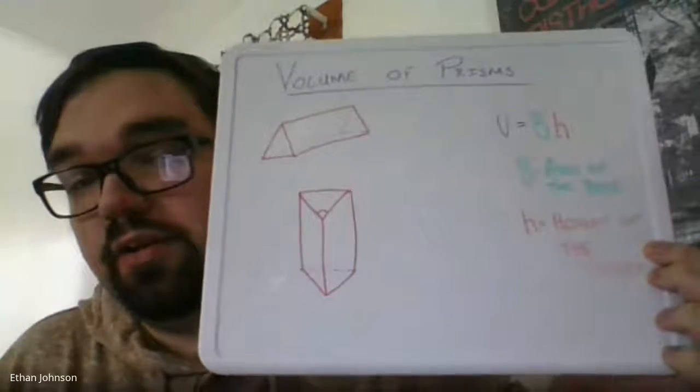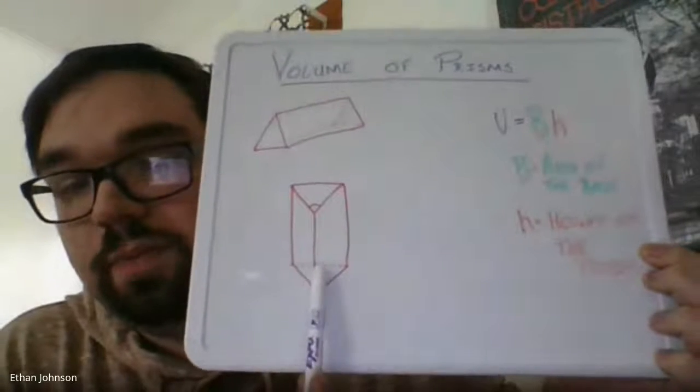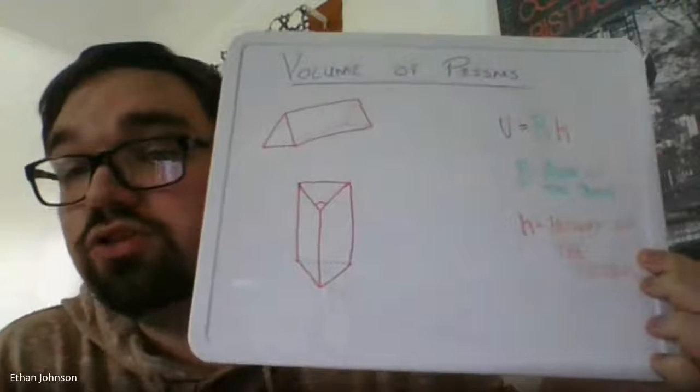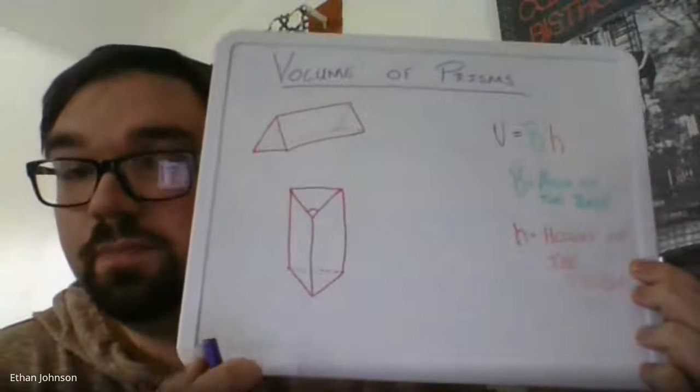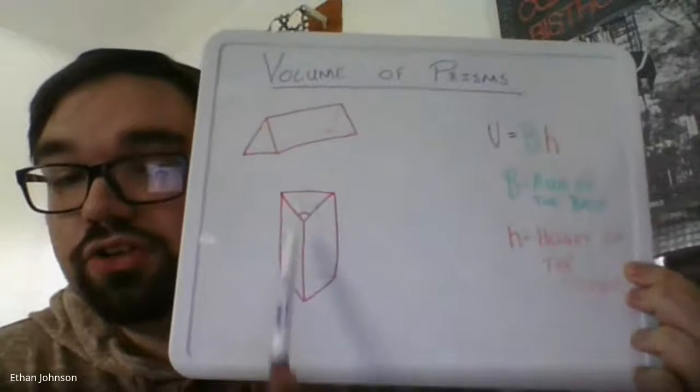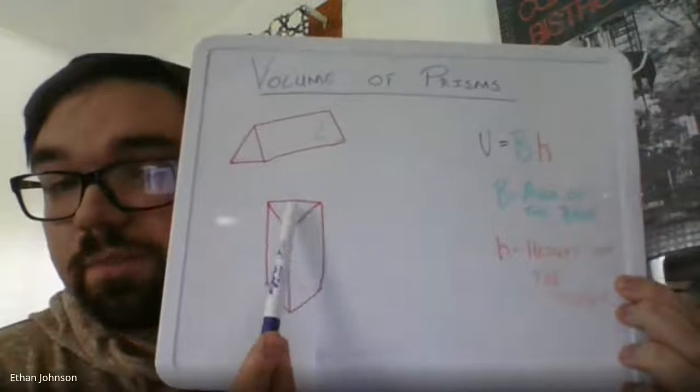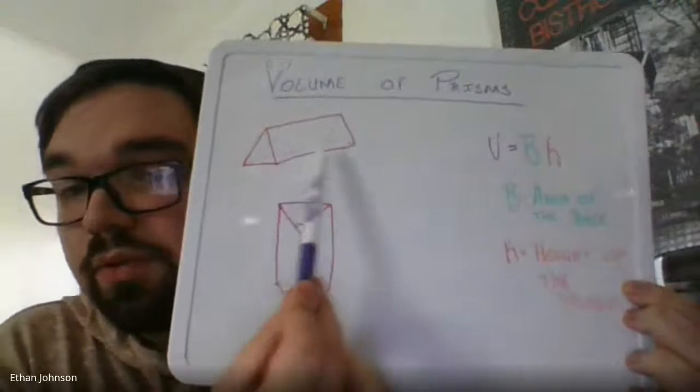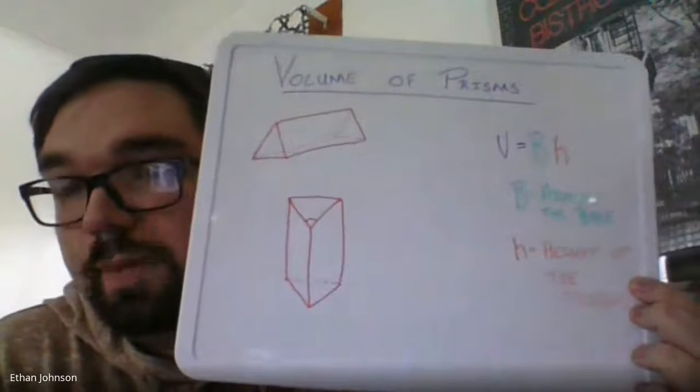We know these are triangular prisms because here's a base, here's a base. There's always two bases in a prism, and they're always opposite of each other. I know this is a triangular prism, and I know this is a triangular prism. Both of them have two bases.